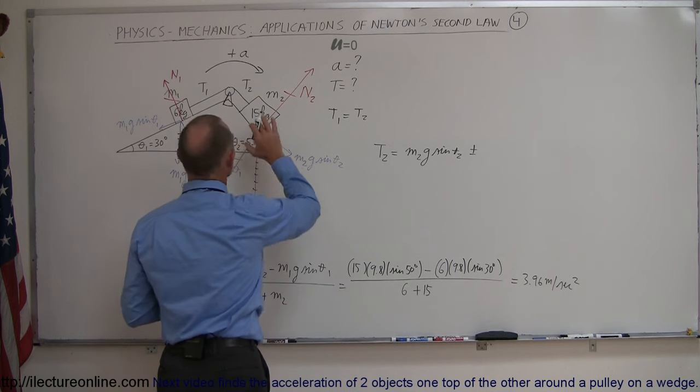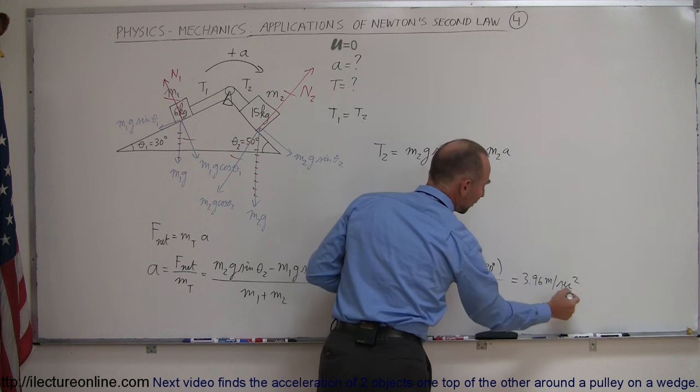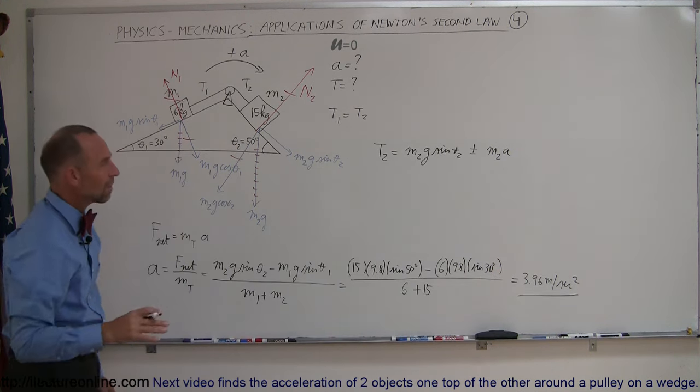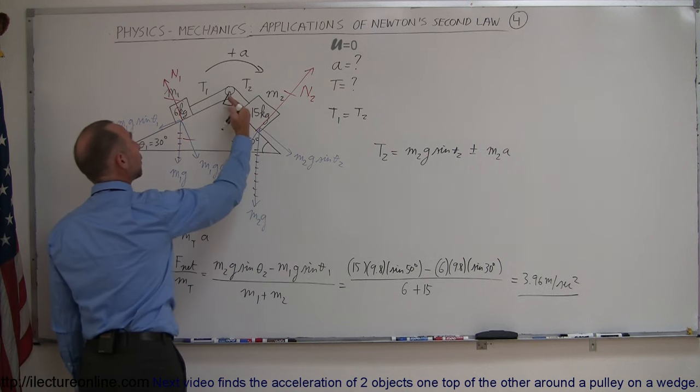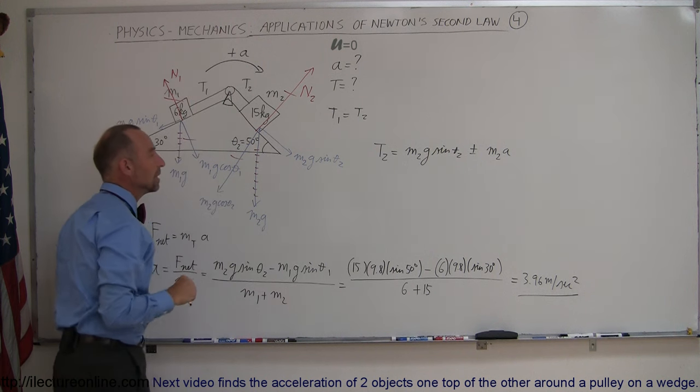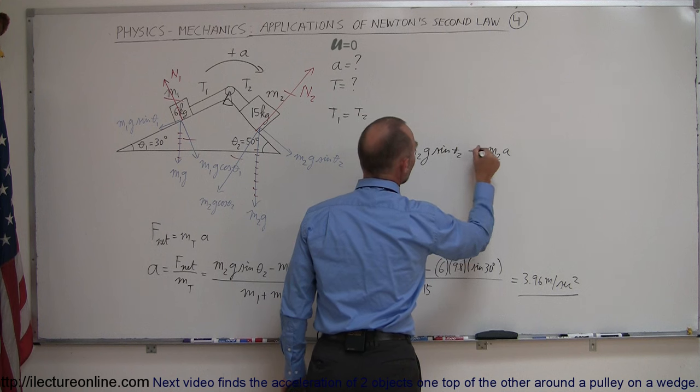The force required to accelerate m2 with acceleration that we found, the 3.96 meters per second squared. Now is it plus or is it minus? It would be plus if the mass was being accelerated upward, it'll be minus if the acceleration is allowed to go downward with the force of gravity, so in this case we can say that it's going to be minus.